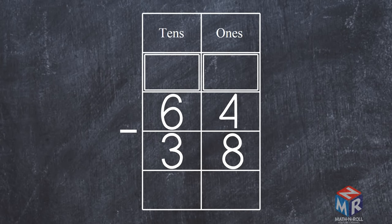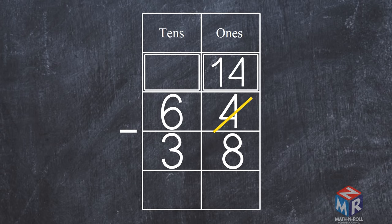We cannot subtract 8 from 4, so we regroup one 10 from 6. Now we have 10 ones plus 4 ones, which makes 14. We cross out the 4 and we write 14 at the top. We cross out the 6 and we write 5 tens at the top because we subtracted one 10.